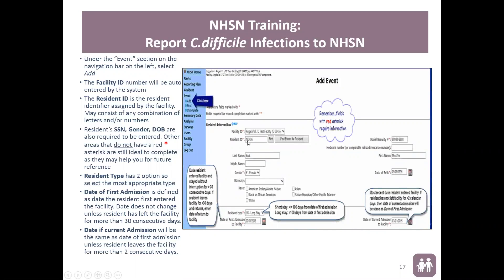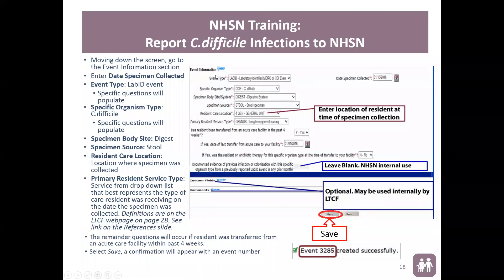Everything with a red asterisk is required. Anything without a red asterisk is optional, though some facilities enter additional information to help identify specific events or groups of events for a resident. The information in this section is standard at all times, except for the location, which depends on where the specimen was collected in your facility. There is a question that asks: 'Has the resident been transferred from an acute care facility in the past four weeks?' If you select no, additional questions will not appear. If you select yes, those questions will populate and you answer them to complete the event.